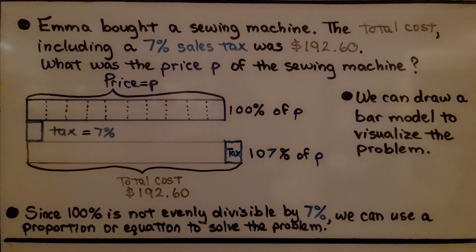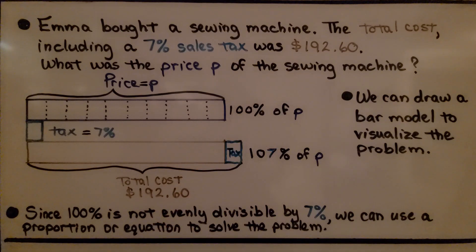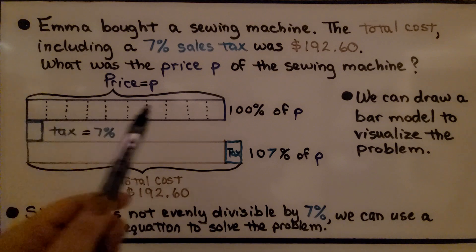Emma bought a sewing machine. The total cost, including a 7% sales tax, was $192.60. What was the price, P, of the sewing machine? So here's the price, P, of the sewing machine. That's 100% of the price.